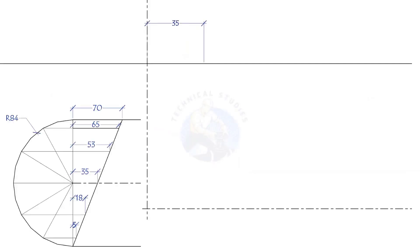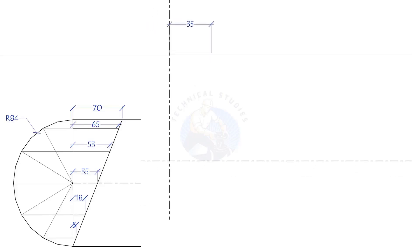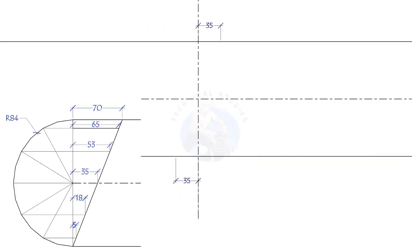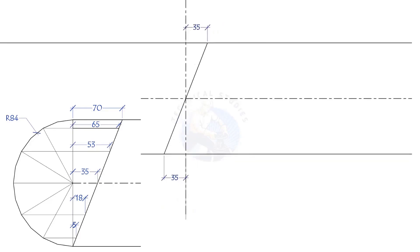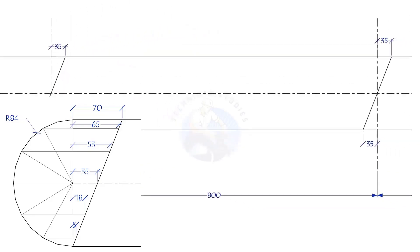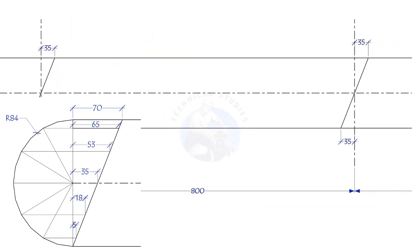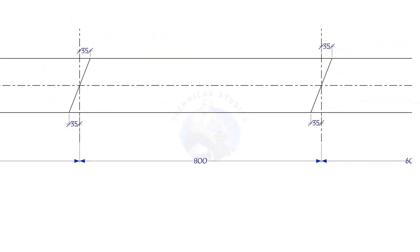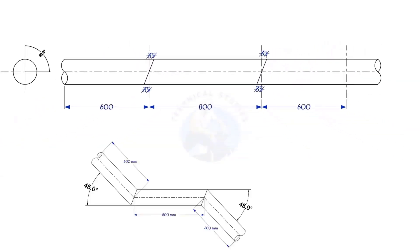Draw a smooth curve connecting these points. Or divide the pipe into 12 parts, draw a layout as shown, and mark. Repeat the process. The direction of the marking shall be the same.